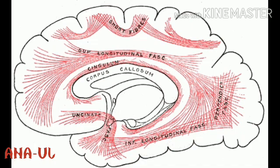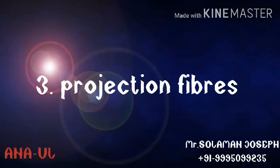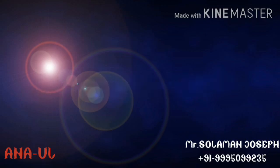Next, the cingulum is a white band within the cingulate gyrus that connects the frontal and parietal lobes with the parahippocampal gyrus. The arcuate fasciculus sweeps around the insula and connects the superior and middle frontal convolutions, which contain the speech motor area, with the temporal lobe, which contains the speech comprehension area. The inferior longitudinal fasciculus connects the temporal and occipital lobes. The occipitofrontal fasciculus extends backwards from the frontal lobe, radiating into the temporal and occipital lobes.